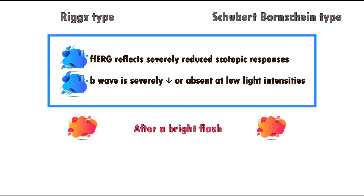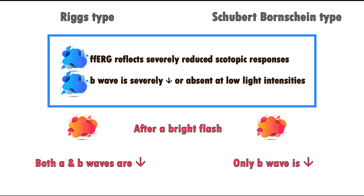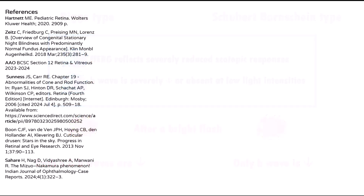However, after a bright flash, both A and B waves are reduced in the Riggs type, whereas the A wave is normal in the Schubert-Bornschein type.